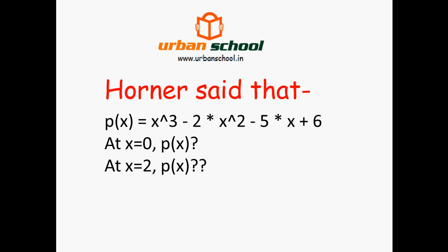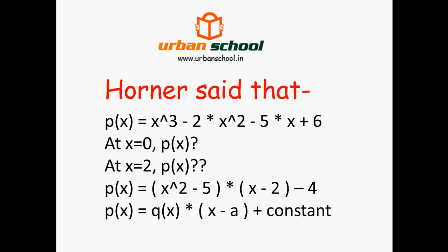What Horner said is: if you just rewrite the polynomial in the form (x² − 5)·(x − 2) − 4, then you can immediately tell that the value of p(x) at x = 2 is −4, because at x = 2 the first part becomes 0, leaving just the constant −4.